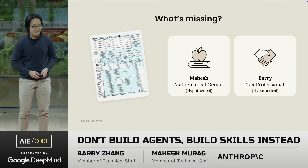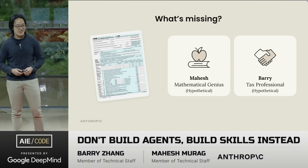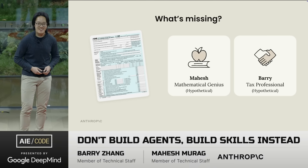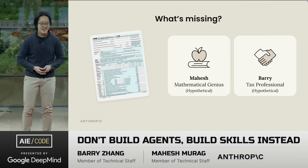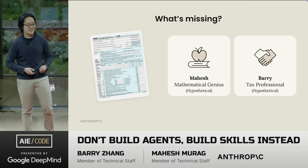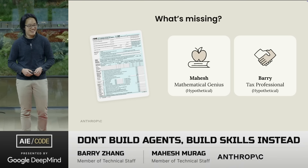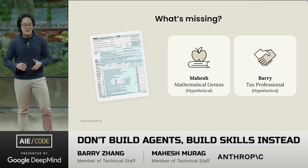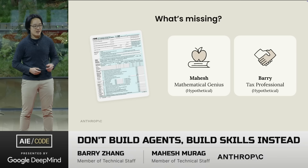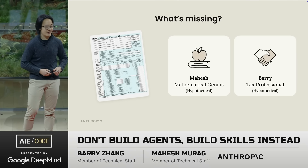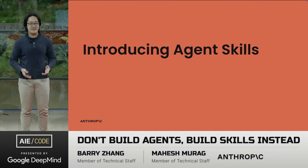Another problem is domain expertise. Who do you want to do your taxes? Is it going to be Mahesh, the 300 IQ mathematical genius, or is it Barry, an experienced tax professional? I would pick Barry every time. I don't want Mahesh to figure out the 2025 tax code from first principles. I need consistent execution from a domain expert. Agents today are a lot like Mahesh — they're brilliant, but they lack expertise. They can do amazing things when you really put in the effort and give proper guidance, but they're often missing the important context up front. They can't really absorb your expertise super well, and they don't learn over time. That's why we created Agent Skills.